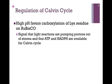Another key regulatory mechanism for the Calvin cycle is pH. In the process of carboxylation, we make use of a key lysine residue, and it needs to be deprotonated for carboxylation to occur, which is favored at high pH. Remember, the pH is much higher than the pK of the residue, so it is deprotonated and can be carboxylated. This is a signal that the light reactions are pumping protons out of the stroma, which means that within the stroma there would be a high pH, telling us that if the light reactions are running, we have enough ATP and NADPH to run the Calvin cycle.